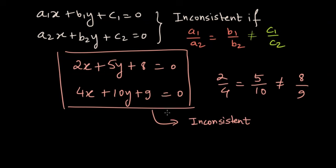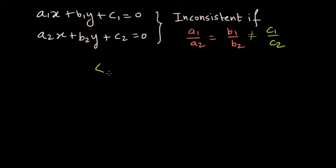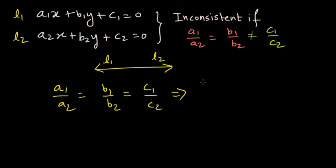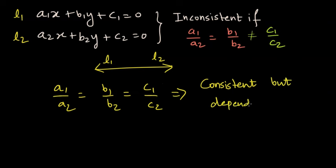Now let's talk about when the two lines coincide. For two lines to be coinciding, they are one and the only line — the same line is tagged as both l1 and l2. In that case, a1 by a2 equals b1 by b2 and c1 by c2 are all the same. If all three ratios are equal, the system is consistent because there are infinitely many solutions, since every point on the line satisfies both equations. However, the two lines are dependent, meaning you can get one equation by multiplying the other by a constant.